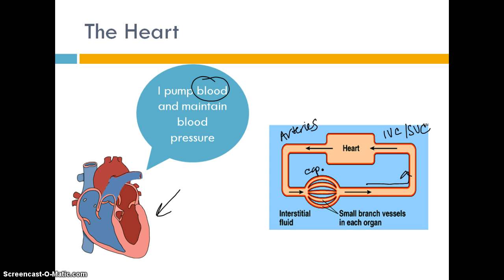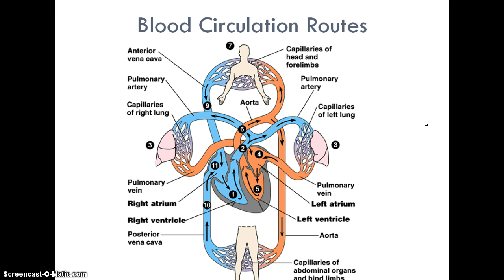Now let's break this down with more detail. In the middle is our heart. On the right side, the right atrium and ventricle are pumping blood to the lungs. On the left side, the left atrium and left ventricle are pumping blood all the way throughout your body.